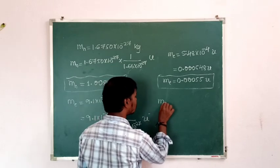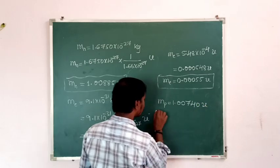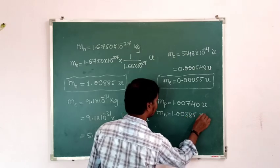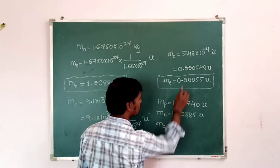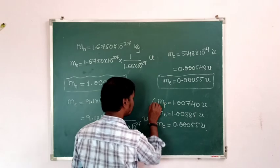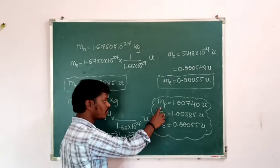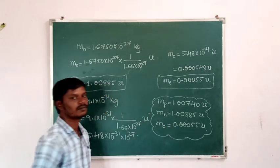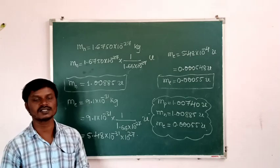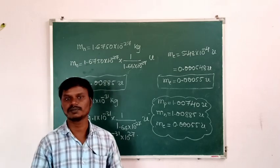Summarizing: mass of the proton = 1.00740 amu, mass of the neutron = 1.00885 amu, and mass of the electron = 0.00055 amu. The mass of the neutron is greater than the mass of the proton, and the mass of the electron is very very small — negligible — compared to the other two. That is why the whole mass of the atom depends on the mass of the nucleus.